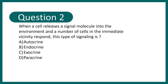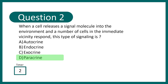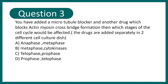Question 2: When a cell releases a signal molecule into the environment and cells in the immediate vicinity respond, this kind of signaling is known as — autocrine, endocrine, exocrine, or paracrine? This question type has been asked three times in the last 10 years in IIT JAM. The correct answer is paracrine signaling.